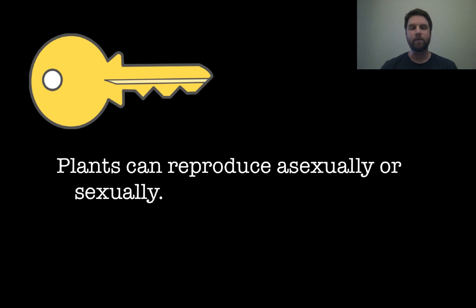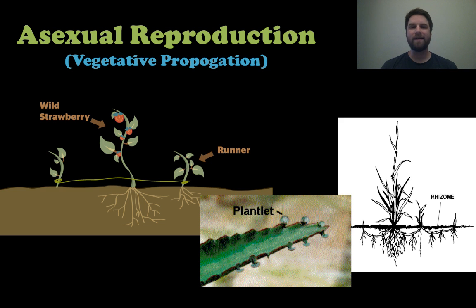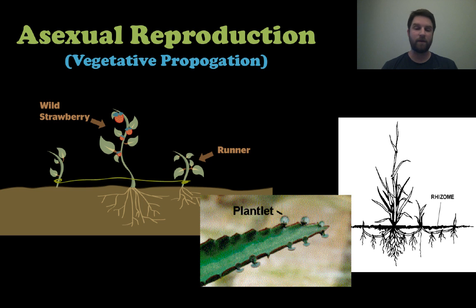Our second key concept: plants reproduce asexually or sexually. Asexual reproduction is sometimes called vegetative propagation. Plants achieve this using runners, plantlets, or rhizomes — the new plant grows directly off the parent plant. A plantlet grows off a leaf, and in strawberry plants you see runners that keep spreading. The genes of each of these plants are exactly the same as the parent because it is asexual reproduction.